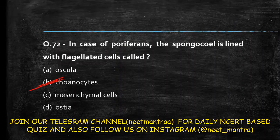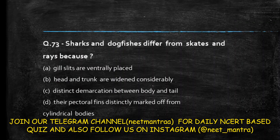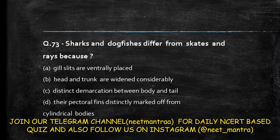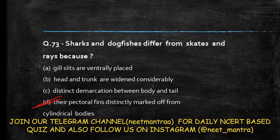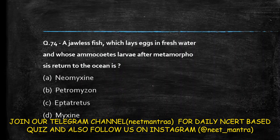Next question: shark and dogfish differ from skates and rays because — gill slits are ventrally placed; head and trunk are widened considerably; there is a distinct demarcation between body and tail; their pectoral fins are distinctly marked off from their cylindrical bodies. The answer is option D: shark and dogfish have pectoral fins distinctly marked off from their cylindrical bodies.